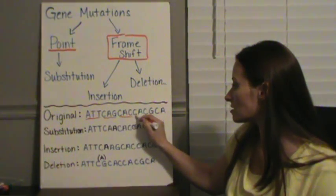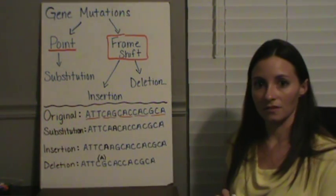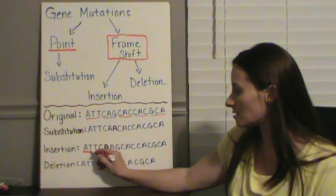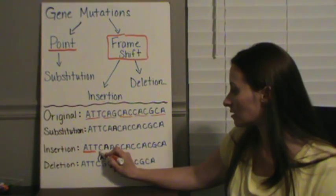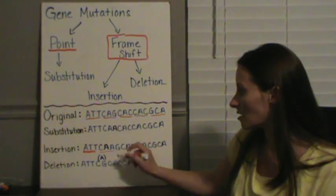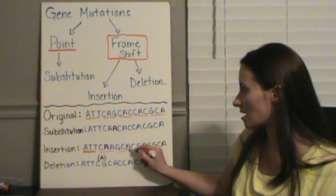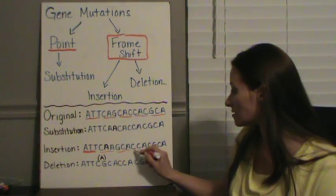And what happens if you're going to read every three letters for a codon, is you're going to notice that we have every three letters here as a codon. But when we get down here, our ATT is good, but then when we get to the next codon, we have CAA, which is not what we had up here. The next one, GCA, not what we had up here, which means it's going to code for a different amino acid.